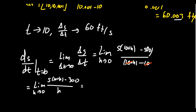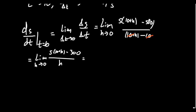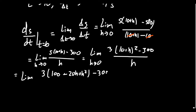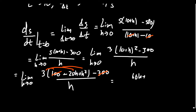Let's take s(10 + H). The function s(t) = 3t², so we get the limit as H approaches zero of [3(10 + H)² minus 300] all over H. Expanding the numerator by foiling: 3 times (100 + 20H + H²) minus 300, all over H. Distributing the 3 gives 300 + 60H + 3H² minus 300. The 300s cancel, leaving 60H + 3H² all over H as H approaches zero.